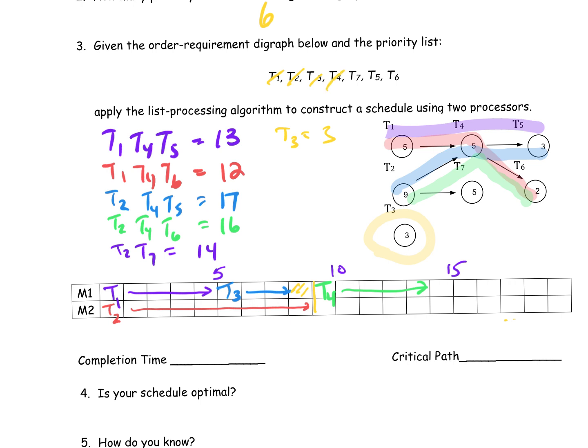Now I look at Task 7. It's dependent only on Task 2. Task 2 has to be done before we can schedule Task 7, so I can bump it right up to Task 2 on Machine 2. Its completion time is 5, so I need 4 more boxes. Take it off your list. My next one is Task 5, dependent on Task 4. Task 4 is done on Machine 1 at 14, so I just bump Task 5 right next to it. Its completion time is 3, I need 2 more boxes. Take it off your list.